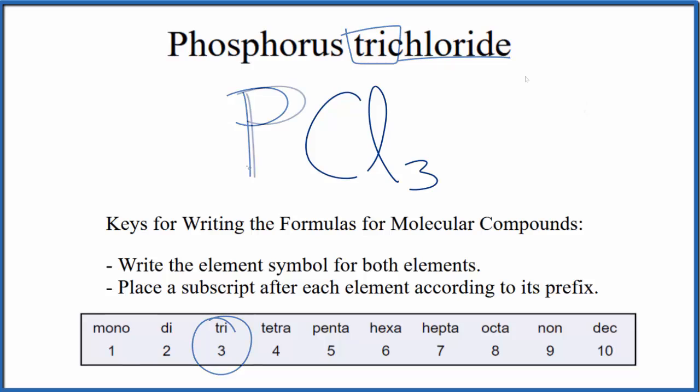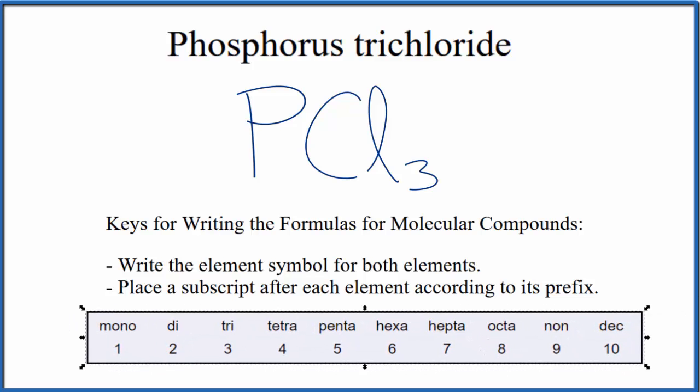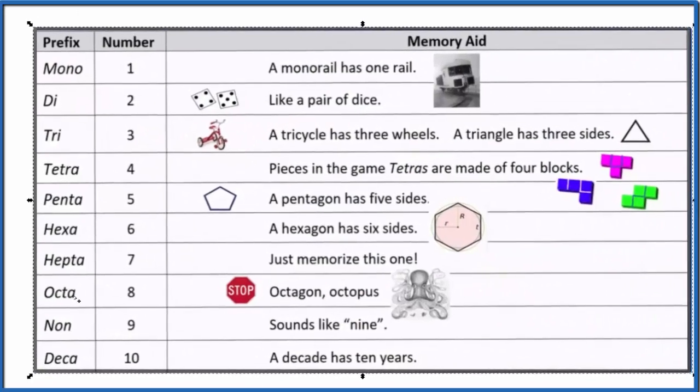And this is the formula for phosphorus trichloride, PCl3. If you need help memorizing these prefixes here, this table might be useful.